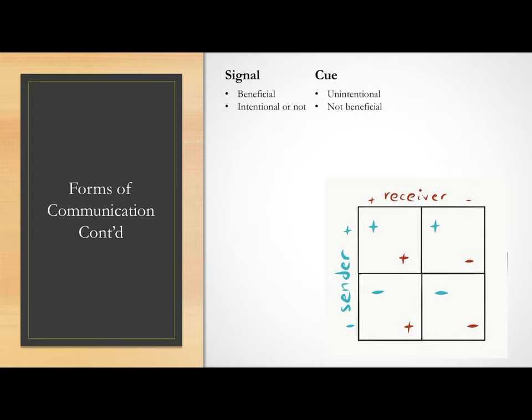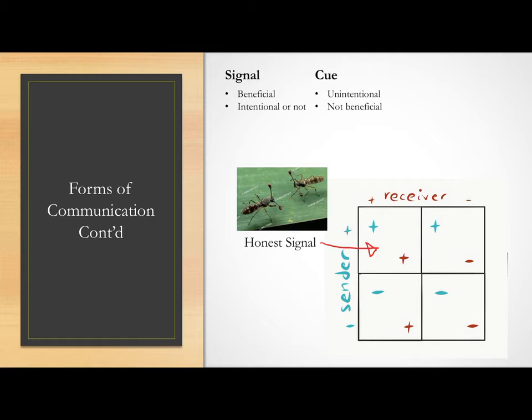If the signal is beneficial to both sender and receiver, it's called an honest signal. One example of an honest signal is the distance between an antlered fly's eyes, which is an honest indicator of how likely that fly is to win a fight against another antlered fly. Keep in mind that beneficial doesn't necessarily mean nice. It's beneficial for the smaller fly to know that it's probably going to lose, so it can avoid the fight altogether.